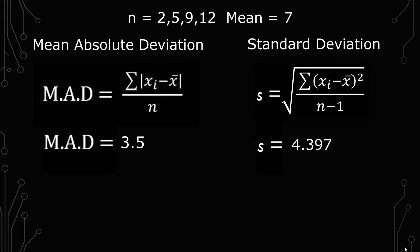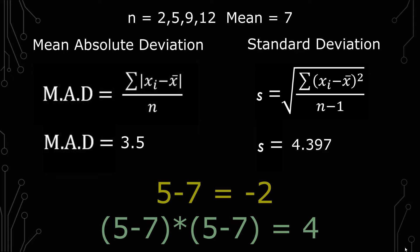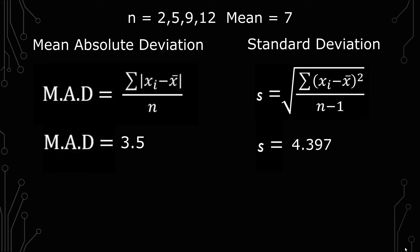And a similar thing happens in standard deviation because instead of doing the absolute value, you're squaring it. Whenever you square something, it makes it a positive if it's a negative.